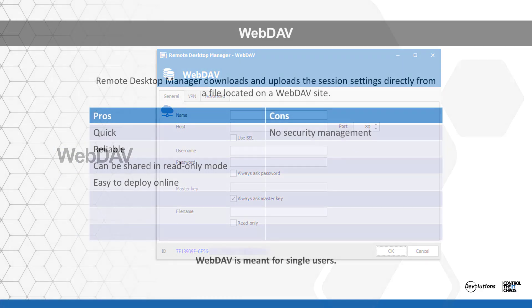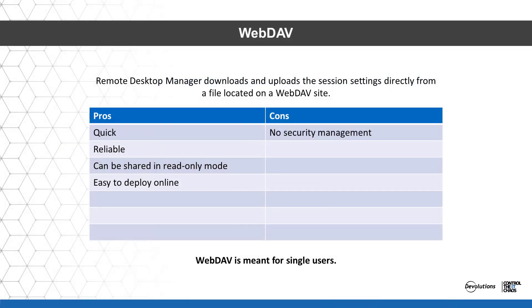With the Webdev data source, Remote Desktop Manager downloads and uploads the session settings directly from a file located on a Webdev site. It uses an HTTP connection to retrieve the XML file directly on the Webdev server. This data source is easy to deploy online and can be shared in read-only mode, but offers no user or security management. This data source is meant for single users.